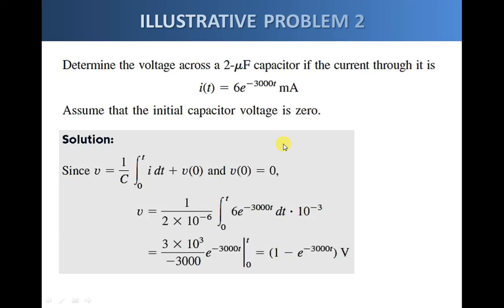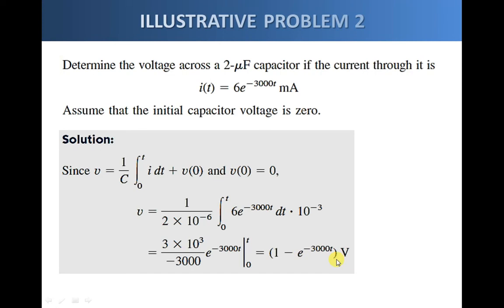We use the formula for voltage, which is obtained by integrating the current from zero to t and then adding whatever initial voltage we have. Since the initial voltage is zero, this simply leaves us the integral term. We substitute the given current function i, perform the integration, and substitute the limits. The result for v is an exponential function, just as the current flowing towards the capacitor is exponential.